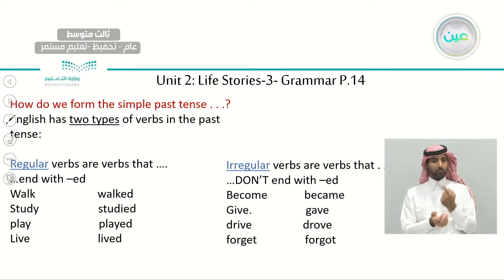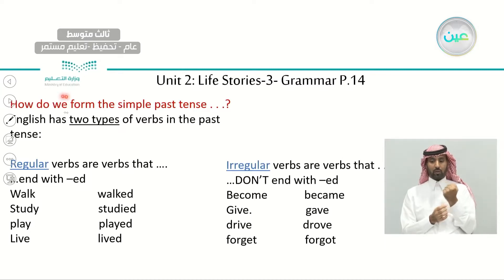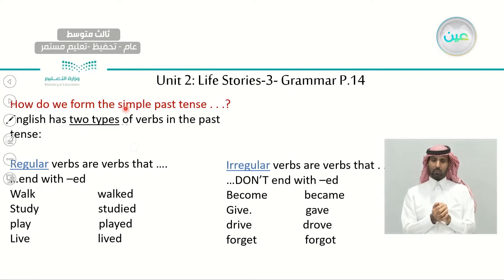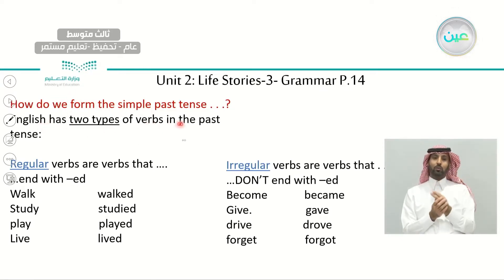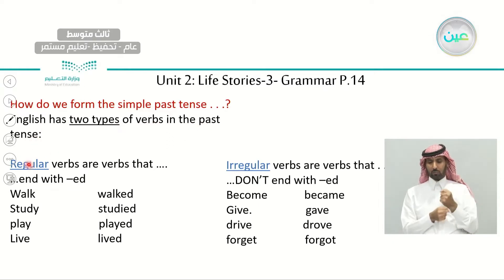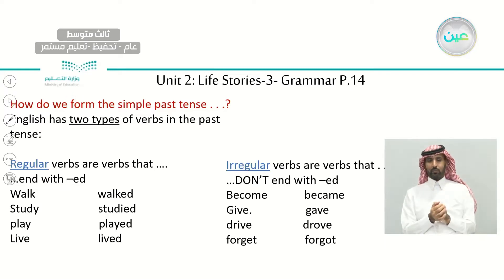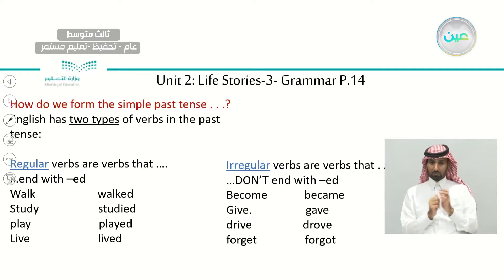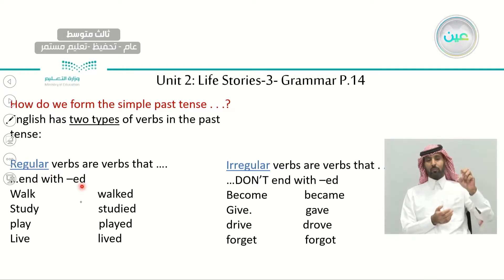How do we form the simple past tense? In English, we have two types of verbs when we are talking about the past tense — regular and irregular. Some verbs we call regular, and some verbs we call irregular.